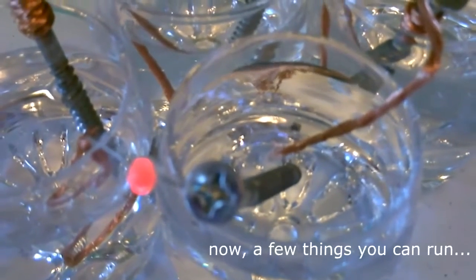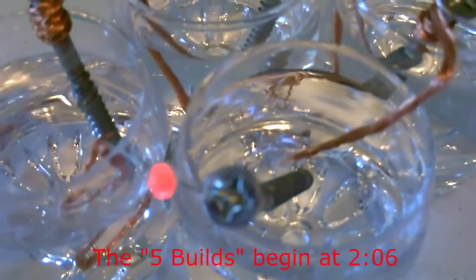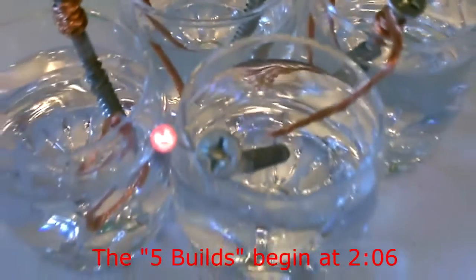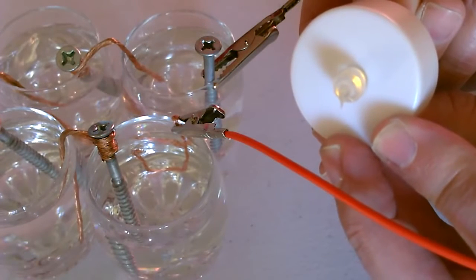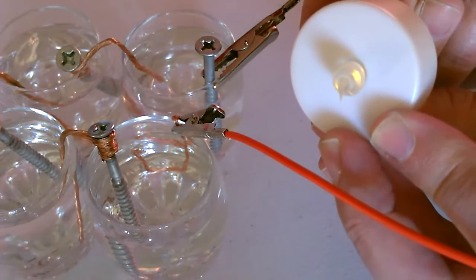All right, here's the red LED running off the water battery. Okay, here's the flickering tea light. I got it hooked up to the four-cell vinegar battery right now. You can see that works pretty good.